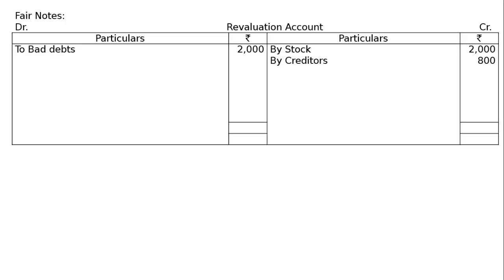Next is bad debts. Regarding debtors, the following debts are proved bad or doubtful. Rs 2,000 due from X is bad to the full extent — to bad debts Rs 2,000, which is a loss to the firm. And Rs 4,000 due from Y, who is insolvent — the estate is expected to pay only 50%, so we get Rs 2,000, which goes to doubtful debts Rs 2,000. The total of the debit side is Rs 4,000.